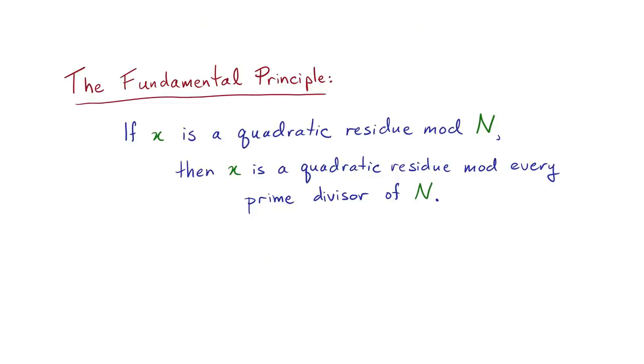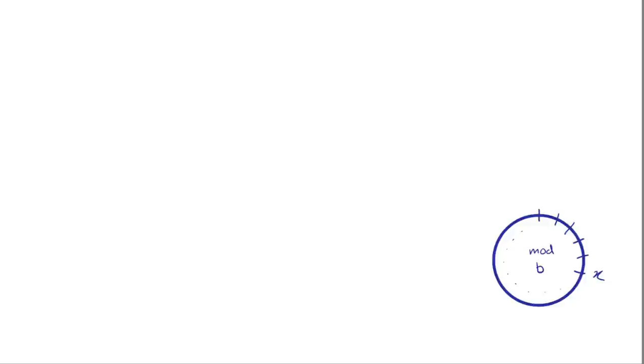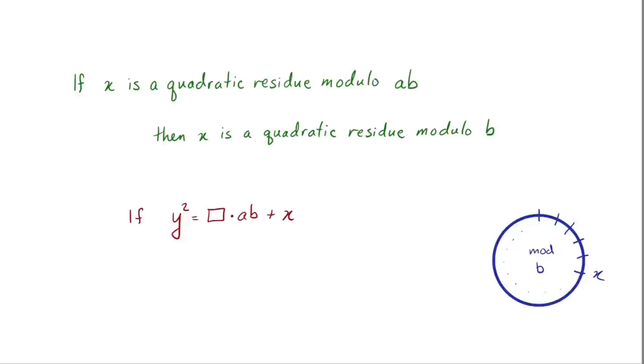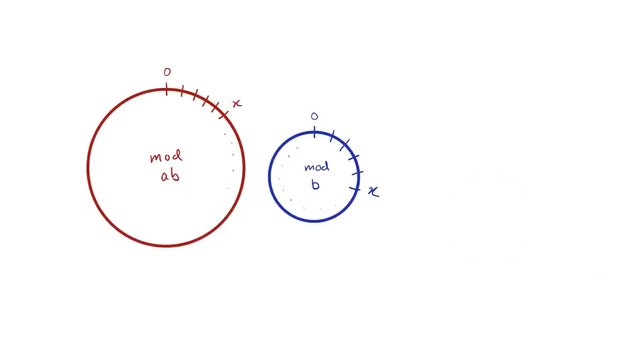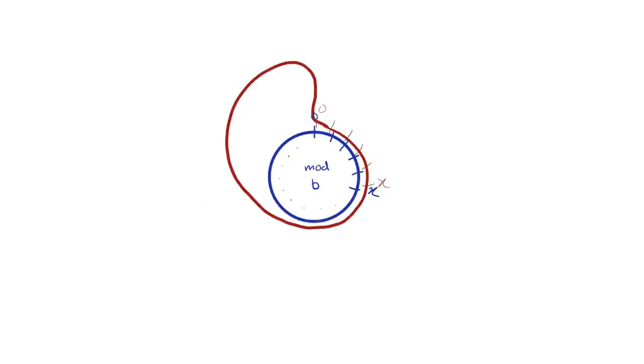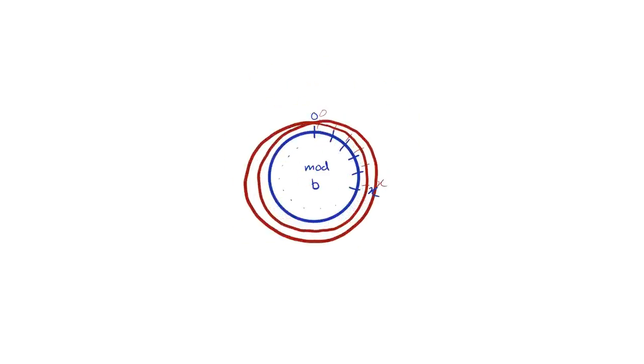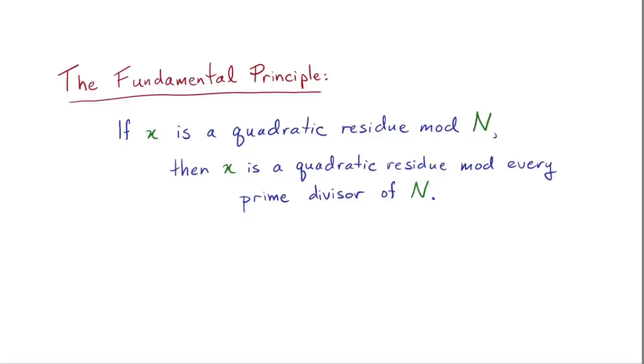The really important fact for us is the following fundamental principle. If x is a quadratic residue modulo n, then it's a quadratic residue for every prime divisor of n. Let's explain why. Suppose that x is a residue modulo b, that is a number on the modulo b clock. Then if x is a quadratic residue modulo a times b, then x is also a quadratic residue modulo b. That's because if I can find a perfect square that has remainder x when I divide by this multiple ab, then it'll have remainder x when I divide by just b itself. That is, if I can write y squared as a multiple of ab plus x, then it's also a multiple of b plus x. This relationship between bigger and smaller clocks is actually just wrapping the big clock around the little one a times. So here it is, the fundamental principle. If x is a quadratic residue modulo n, then it's a quadratic residue for every prime divisor of n.